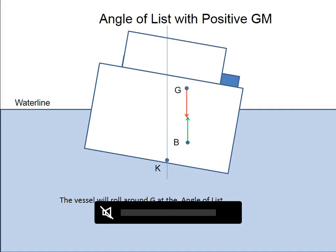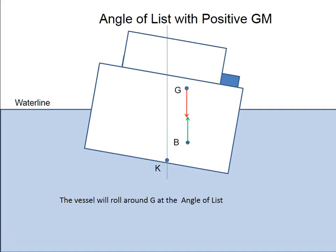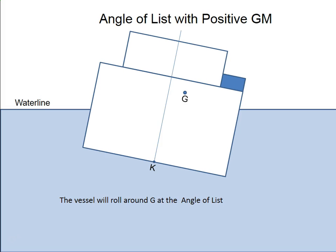So the vessel inclines. Now the vessel has come back to rest. B is back underneath G. The vessel is no longer upright, but it is back at equilibrium. We're just going to look at what happens now. I just removed B just for a minute. And this is the new center of gravity. This is the angle of list.